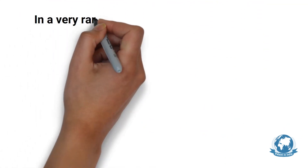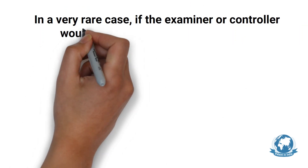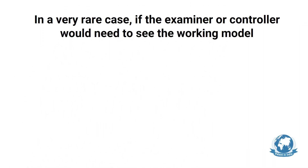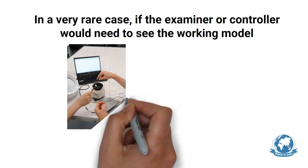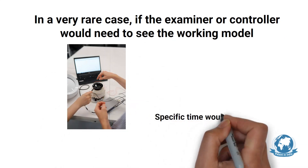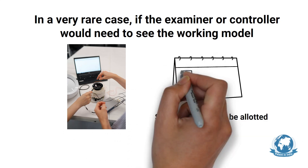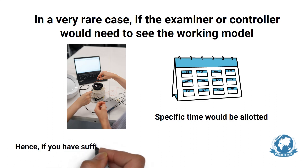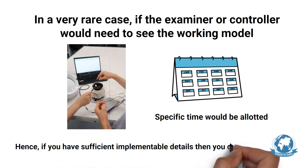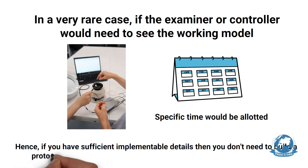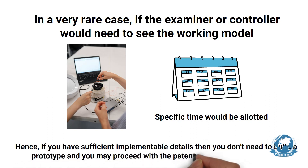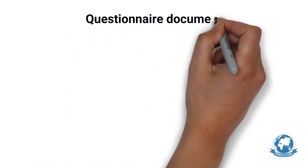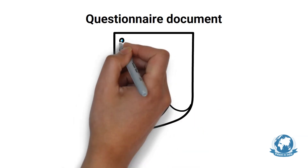In a very rare case, if the examiner or controller from the patent office needs to see a working model before granting the patent, such a request would be communicated to the applicant and specific time would be allocated to provide a prototype or working model. But such scenarios are very rare. Hence, if you have sufficient implementable details ready, you don't need to build a prototype or working model and may proceed with the patent filing for your invention.